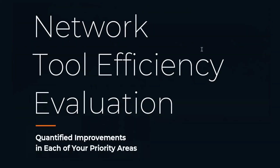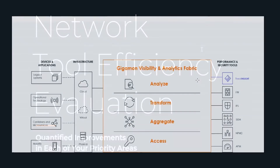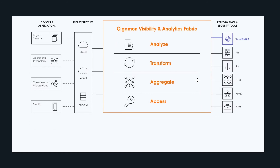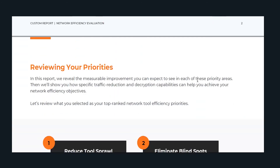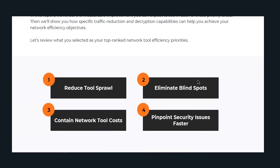So let's walk through the report. The first thing you're going to see is this nice high-level diagram which shows how the Gigamon fabric sits between your IT infrastructure and your tools. We then show you these priorities in the order that you selected them in the wizard, and later on in the report we're going to present you insights for each of these priorities in this order.